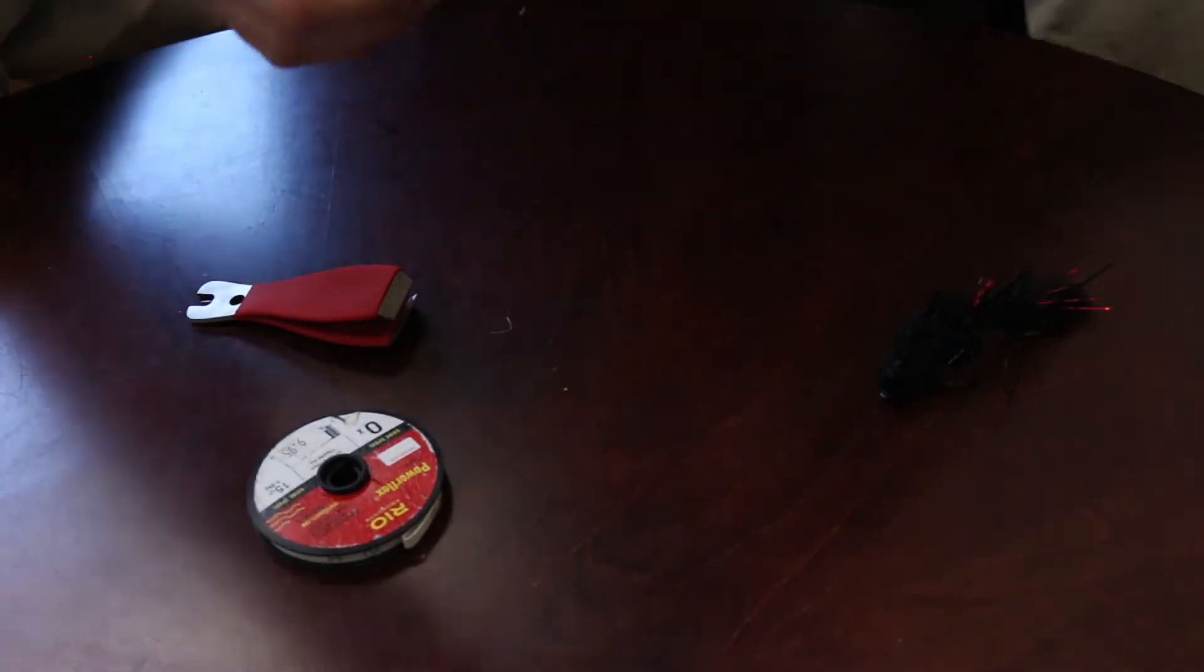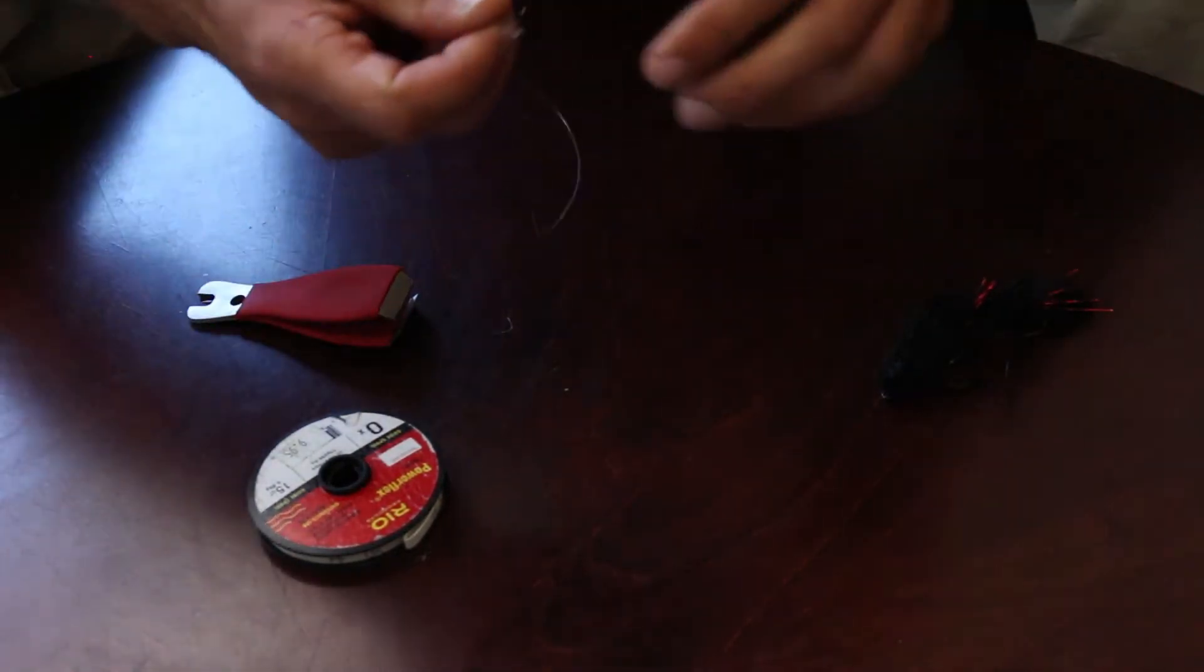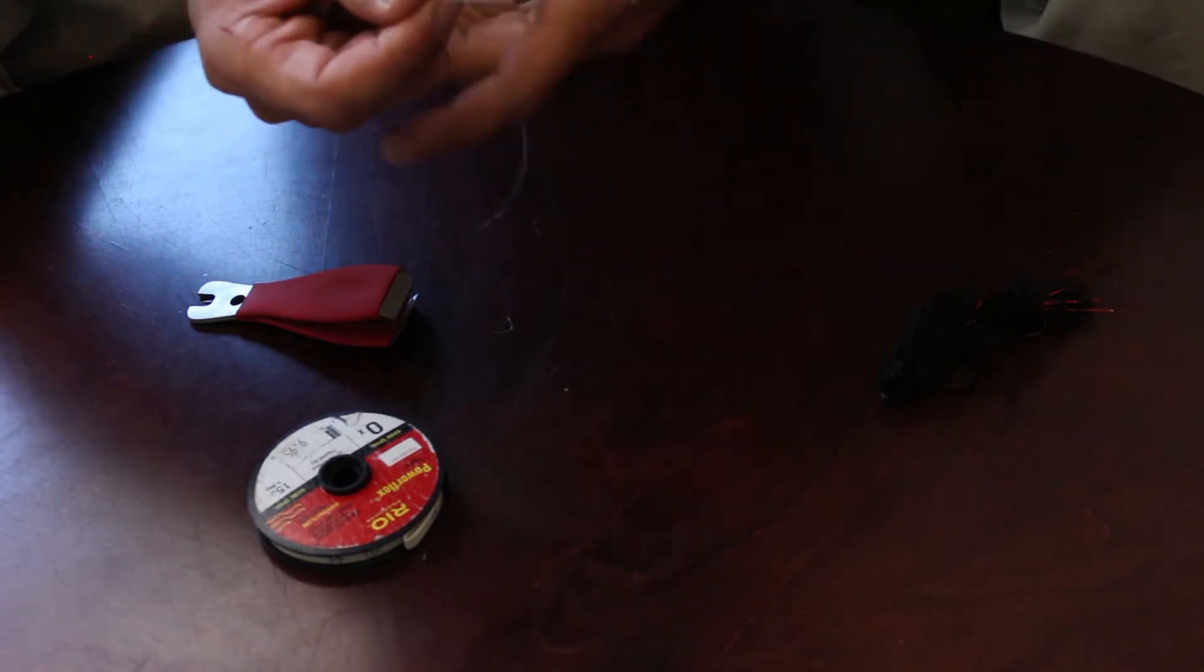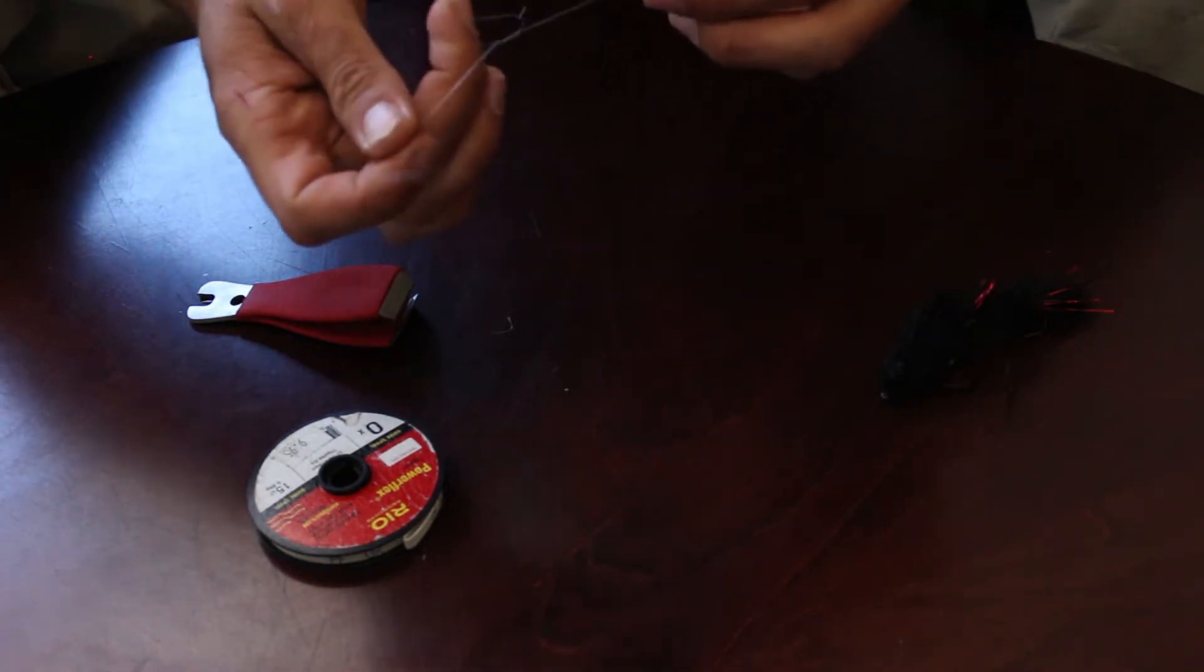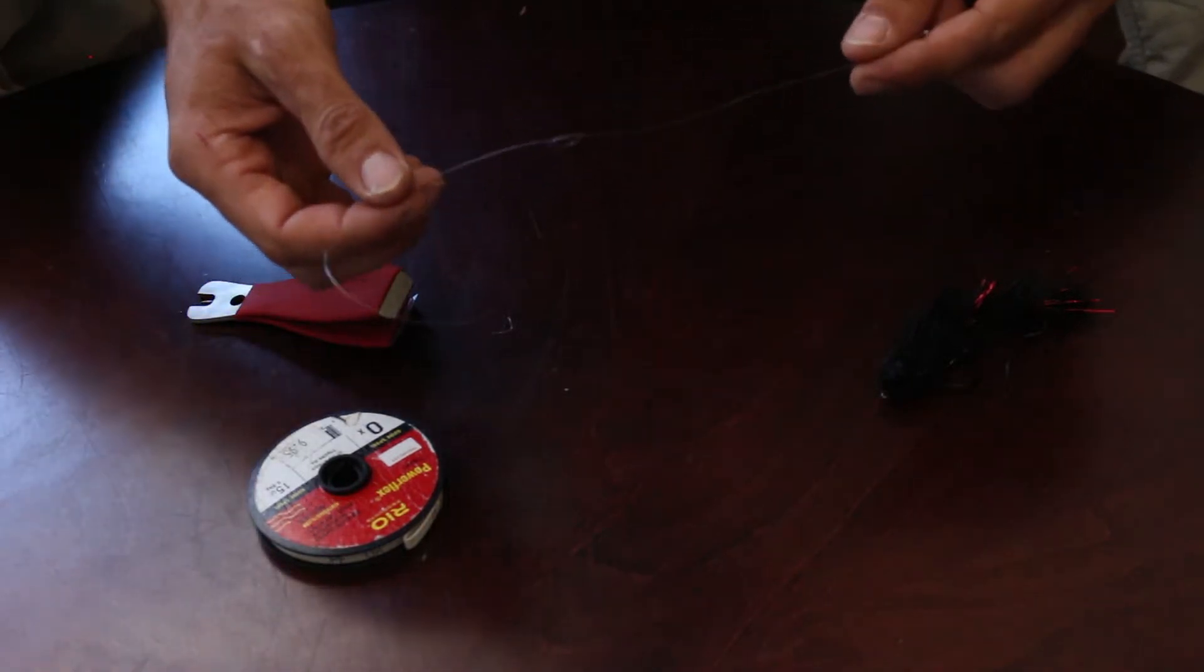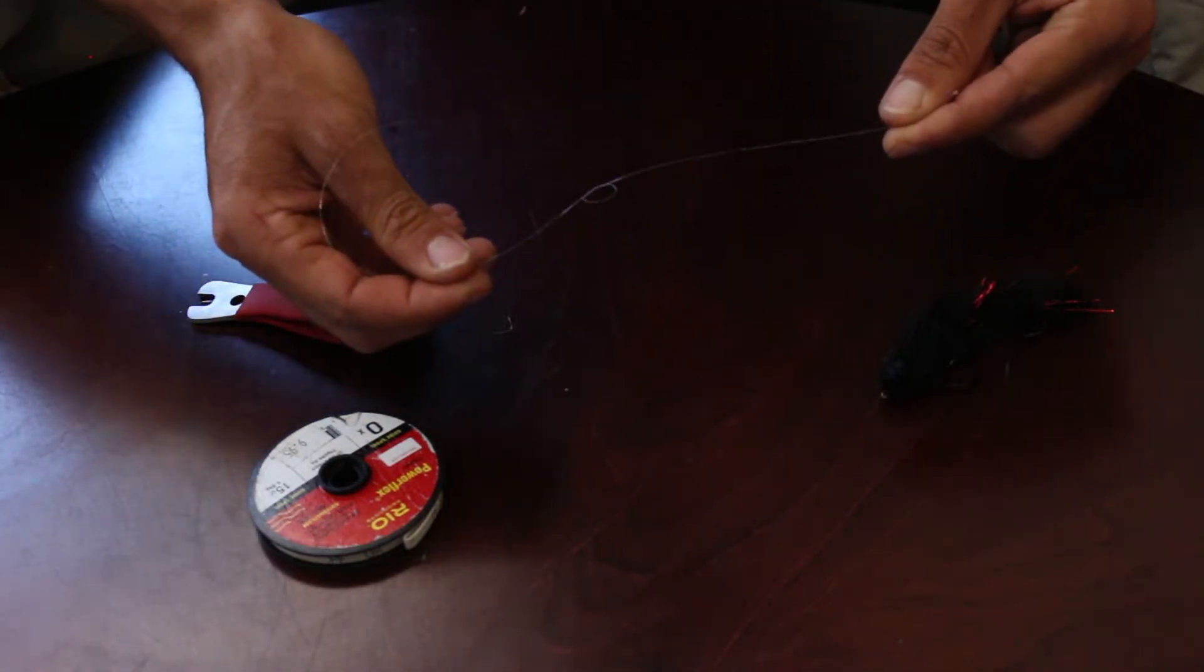Now the first thing we're going to want to do is take the tag end of our leader or any fly line or fishing line that we're trying to connect this fly to, and we're going to first make a little bit of a loop.